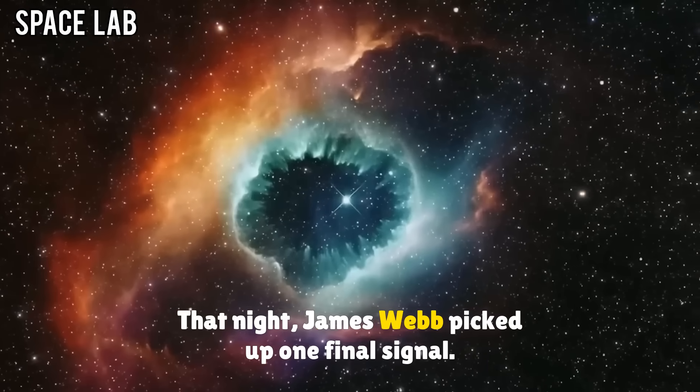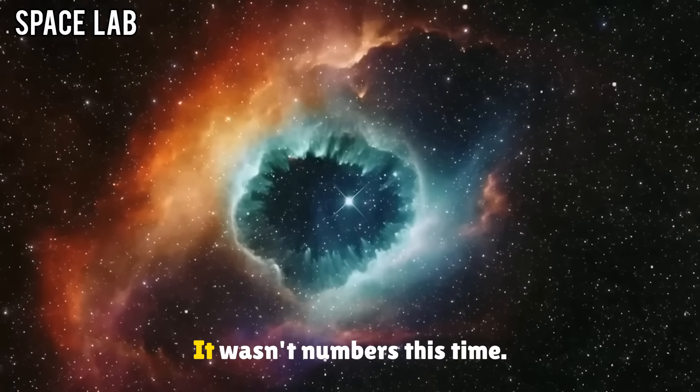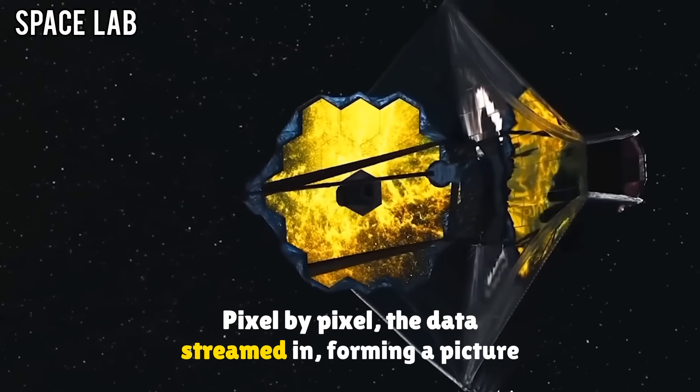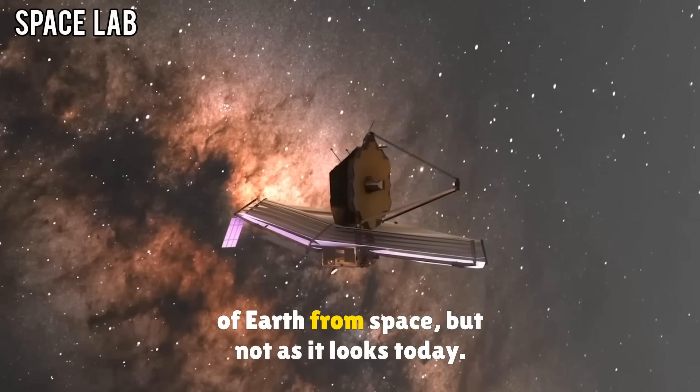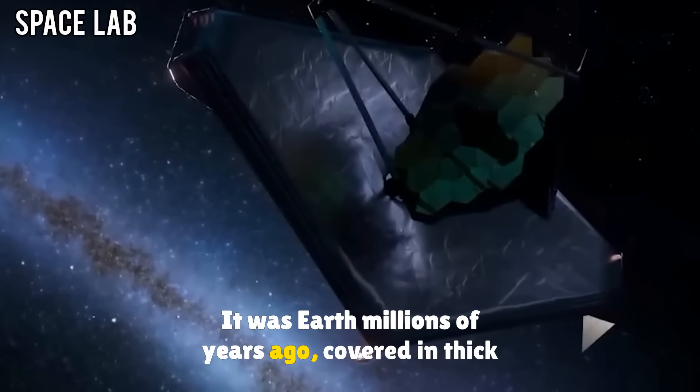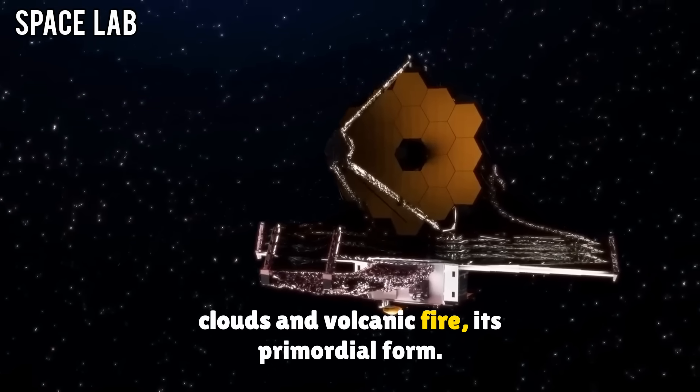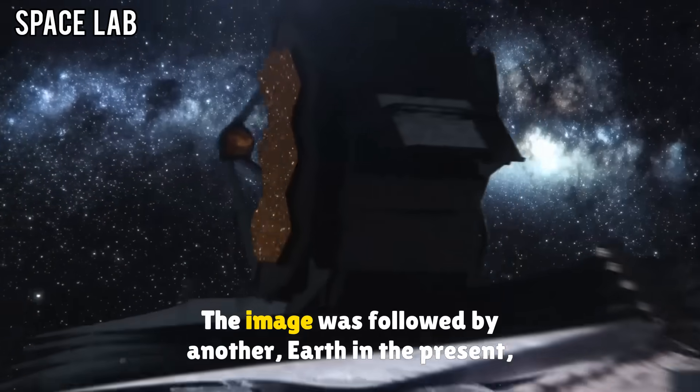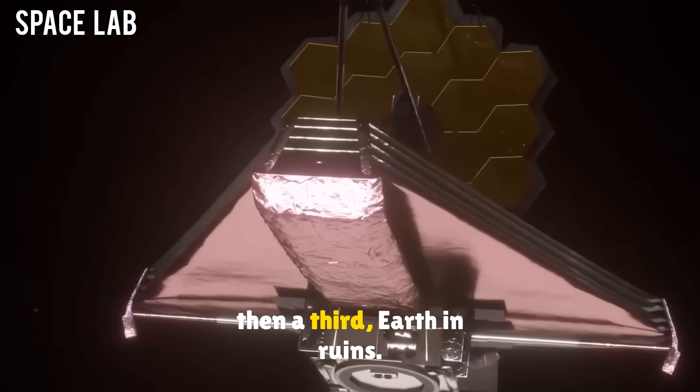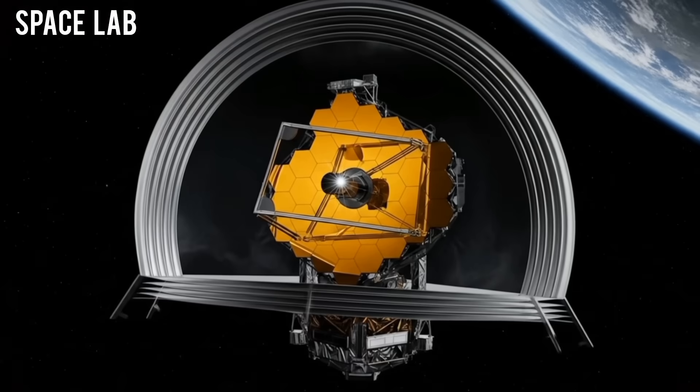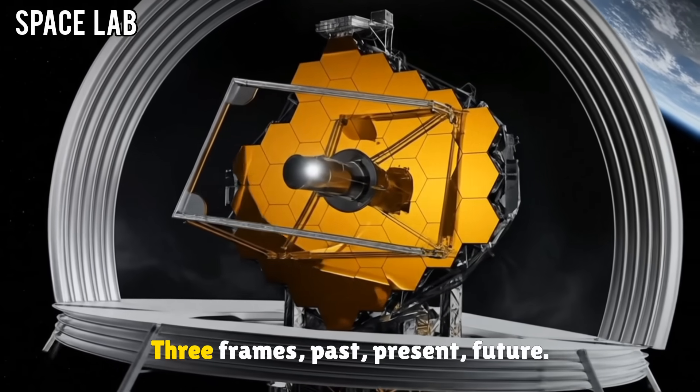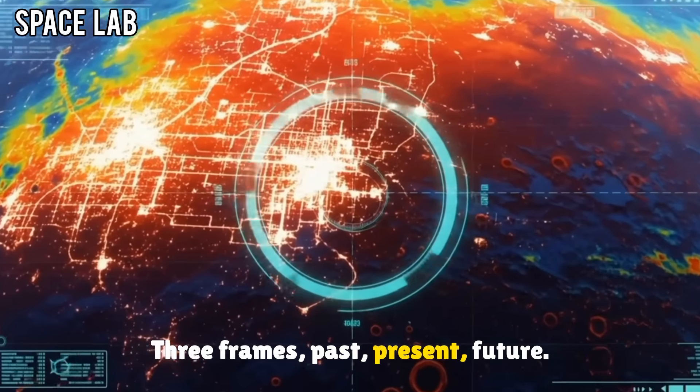That night, James Webb picked up one final signal. It wasn't numbers this time, it was an image. Pixel by pixel, the data streamed in, forming a picture of Earth from space. But not as it looks today. It was Earth millions of years ago, covered in thick clouds and volcanic fire, its primordial form. The image was followed by another: Earth in the present. Then a third: Earth in ruins, cities buried, oceans dried, a dead world. Three frames: past, present, future.